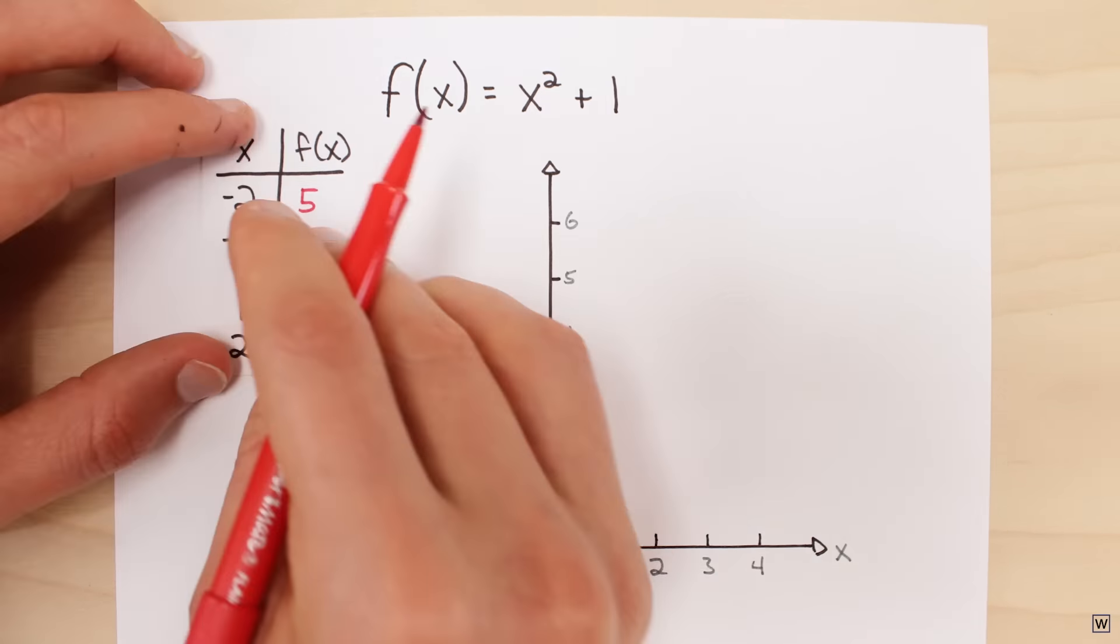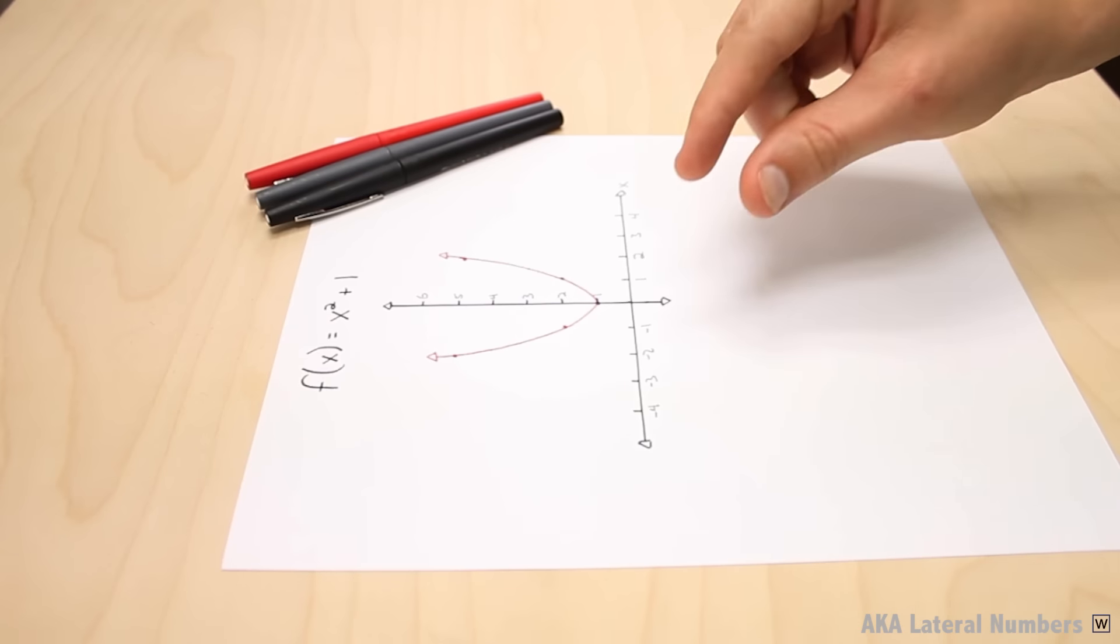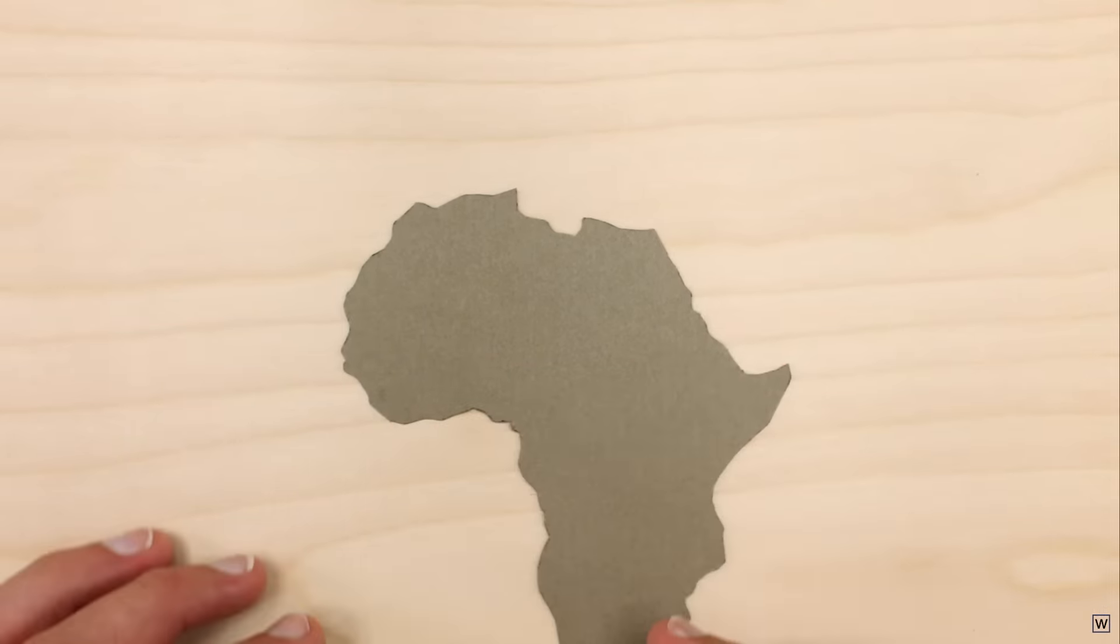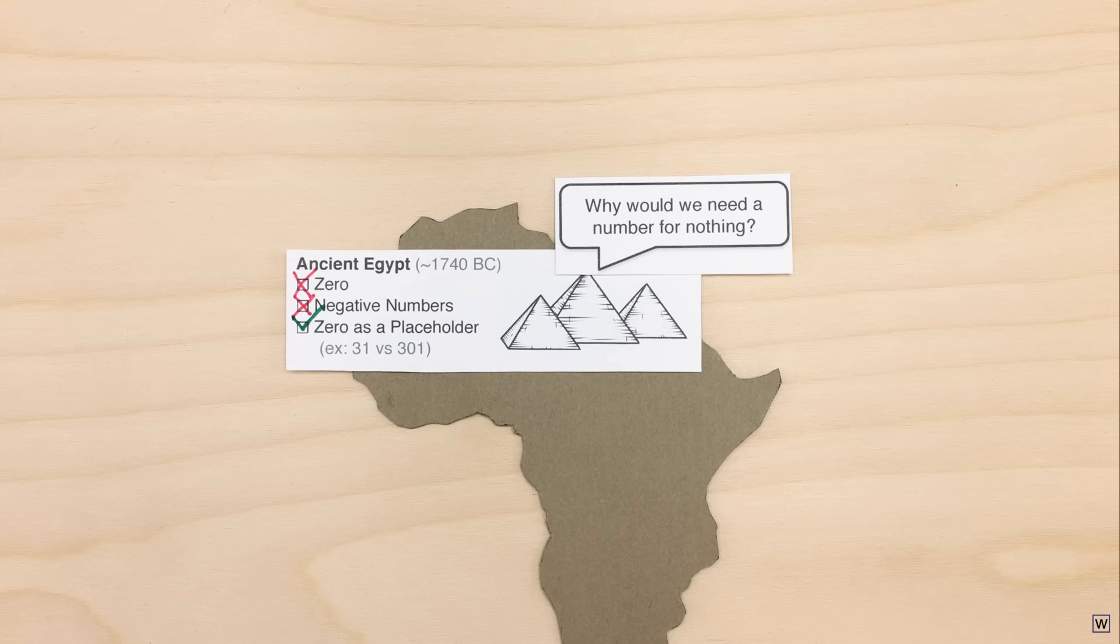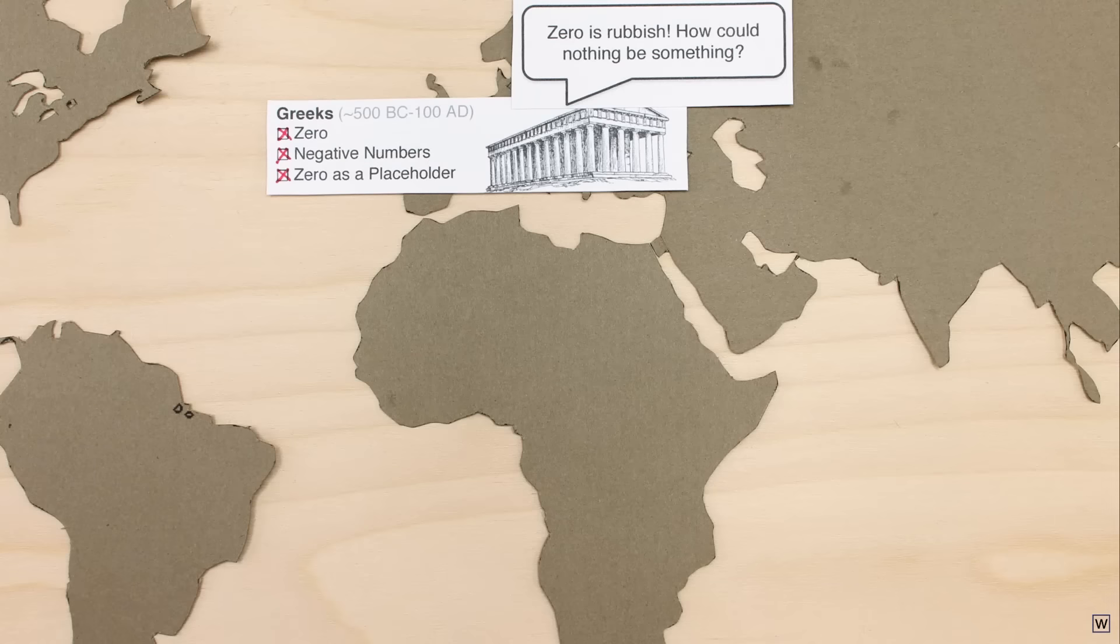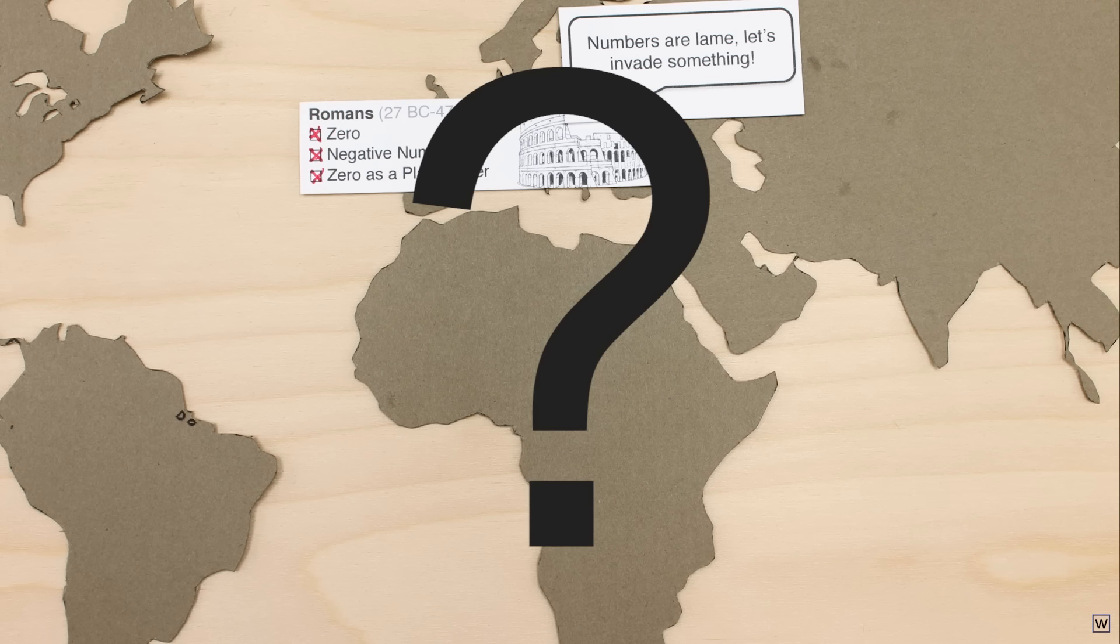Last time we left off wondering how imaginary numbers could help us find the roots of our equation x squared plus 1, and further how imaginary and negative numbers even became part of modern mathematics after being avoided and ignored for a couple thousand years because, let's be honest here, they don't really make that much sense.